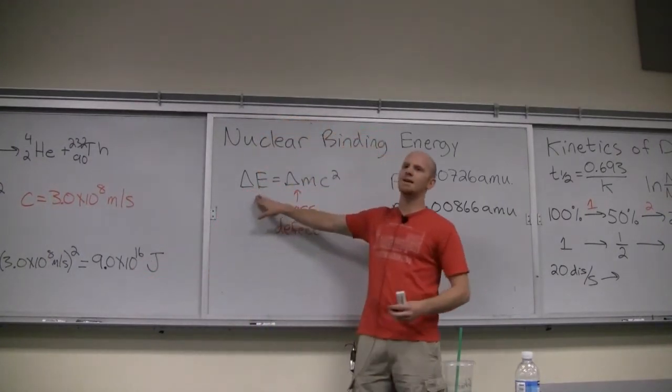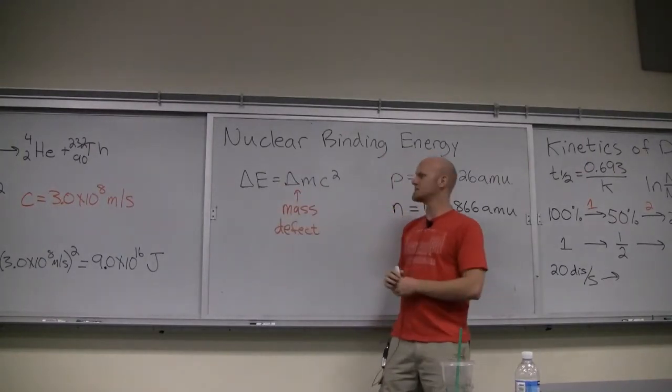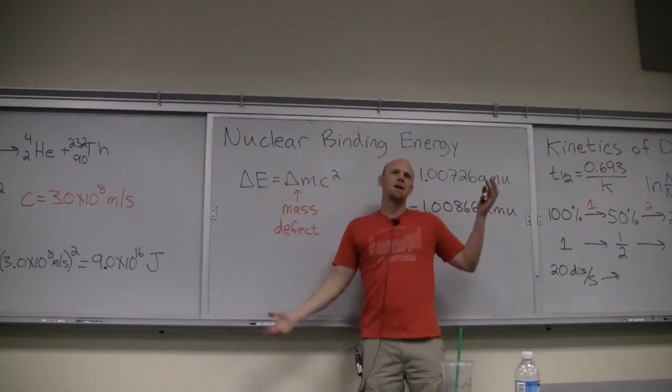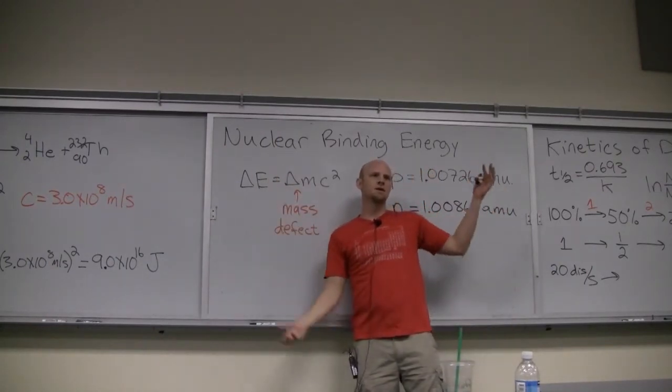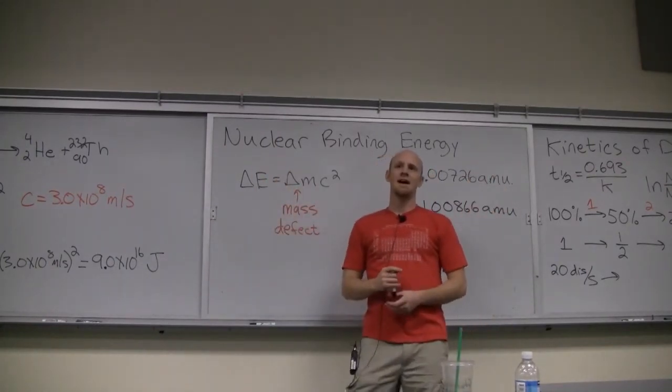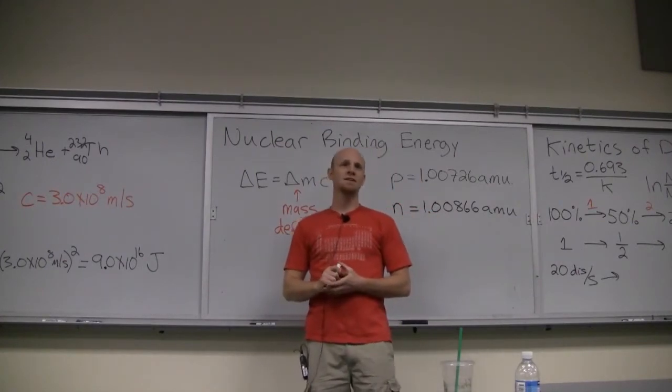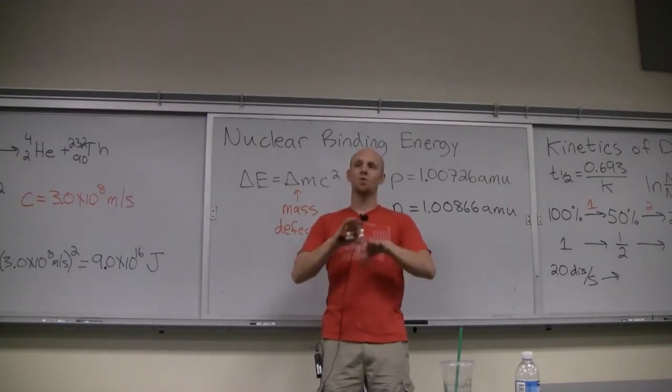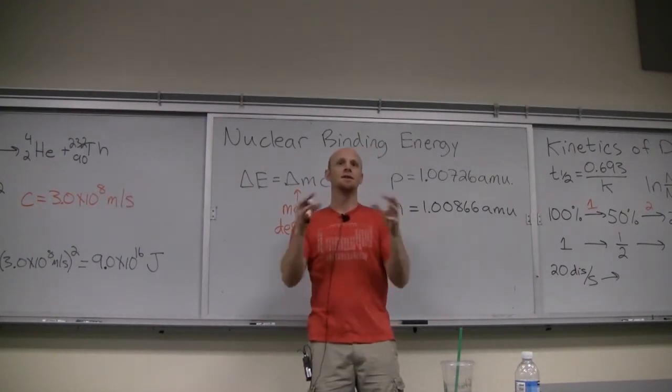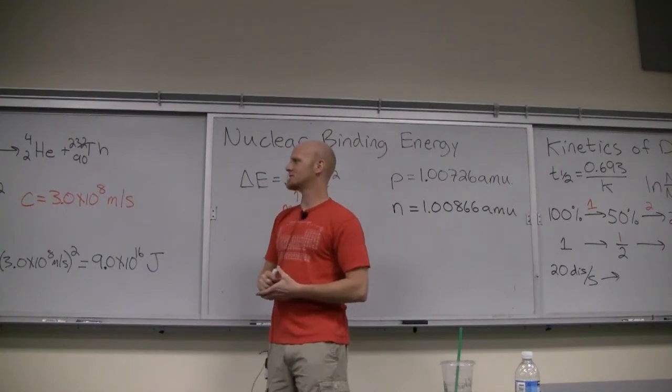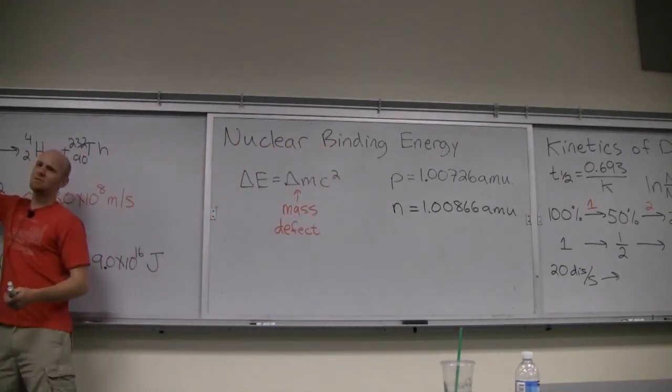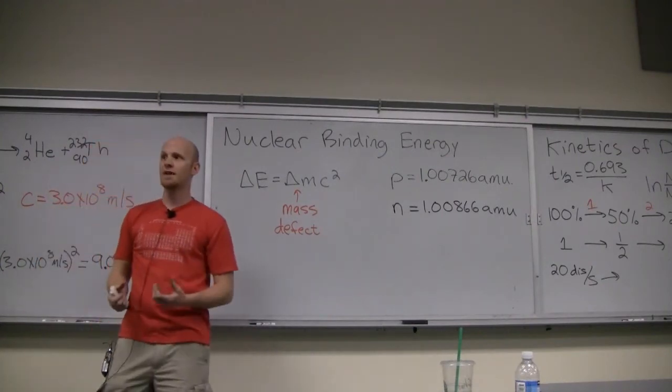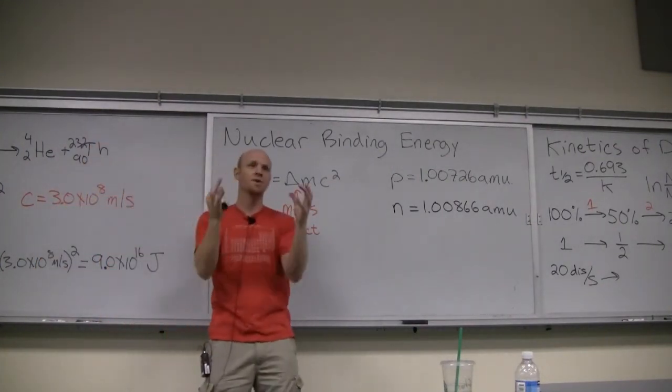Same thing with this nuclear binding energy. We've done this calculation. You find the mass defect, convert it to kilograms, plug it in here, get a nuclear binding energy. But I'm comparing apples and oranges, because if I compare neon, how many protons and neutrons would neon-20 have in its nucleus? 10 protons, 10 neutrons, it'd have 20 total nucleons in its nucleus. If I compare that to uranium-235, uranium-235 has 235 protons and neutrons, 235 nucleons that it's trying to hold in its nucleus.